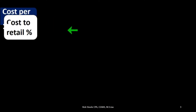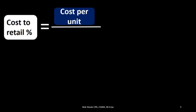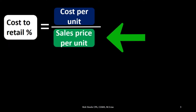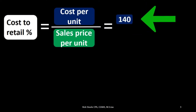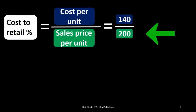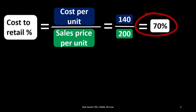First, we're going to calculate the cost-to-retail percentage. We take the cost per unit — this is the cost per unit of the inventory that we are purchasing, then marking up and selling — and divide that by the sales price per unit. For example, a cost of 140 compared to a sales price of 200: we're buying them for 140 and selling them for 200, which gives us a 70% cost-to-retail percentage.